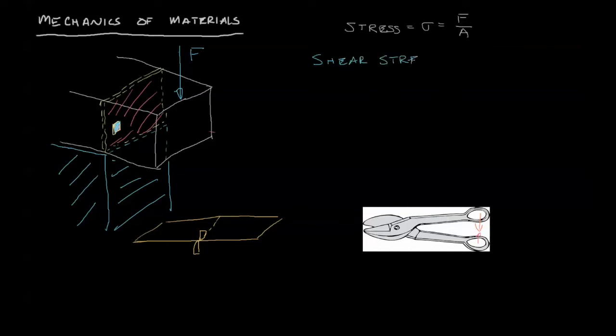And the concept is the same. It's still force per unit area. We often use tau as the insignia. Axial stress, we usually use sigma.